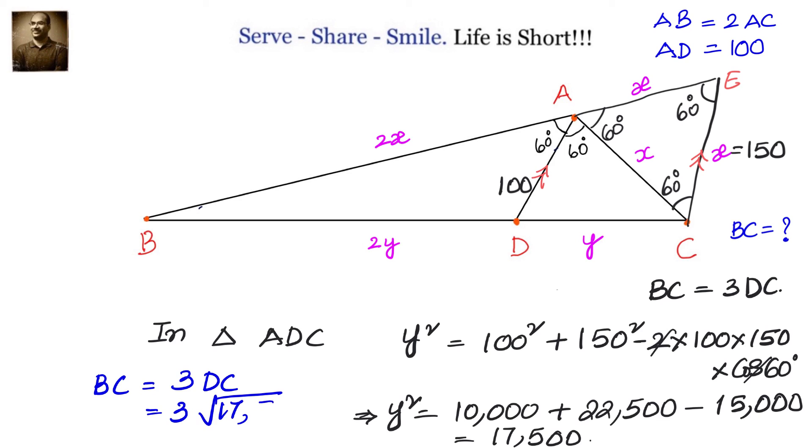Square root of 100 is 10 and square root of 25 is 5. So we can write it as 3 into 5 into 10 into root 7 or 3 into 50 into root 7 or 150 root 7. So BC is equals to 150 root 7.